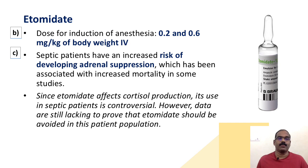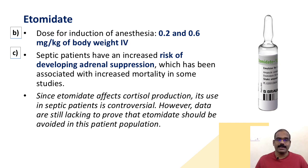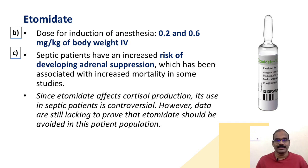The next sub-question is about the dose for induction of anesthesia: 0.2 to 0.6 milligrams per kg of body weight. Do not forget to mention the route of administration — intravenous. Part three was about the concern while using etomidate in septic patients: septic patients have an increased risk of developing adrenal suppression, which has been associated with increased mortality as indicated by some studies.